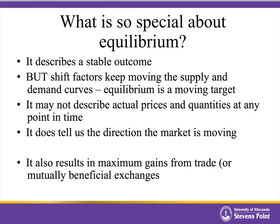What is so special about equilibrium? Well, it really just gives us this nice stable outcome, but in the real world, these shift factors keep moving. So our supply and demand curves keep shifting around, which means that equilibrium is really a moving target. This model may not give us a perfect description of actual prices and quantities at any point in time, but it does tell us what direction the market is moving. If we currently have shortages, we know the price is going to be rising. If we currently have surpluses, we can infer the price is going to be falling. Equilibrium also gives us the maximum gains from trade, or the most mutually beneficial exchanges.